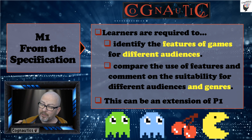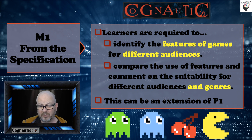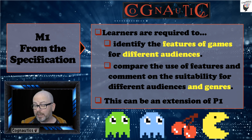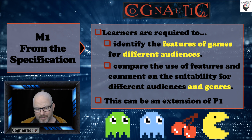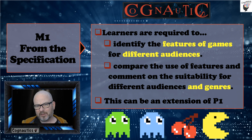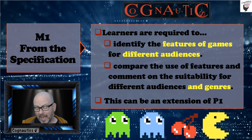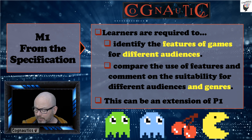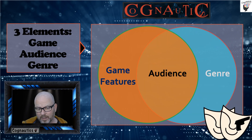In yellow are the three key parts to this task: the features of games — and these are the games you've already talked about, the three that you chose for P1 — and how these games link to their different audiences and genre. So you've got three different areas that you're looking at here for this M1 task.